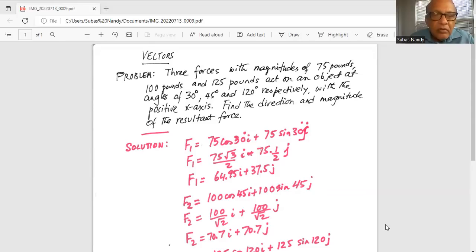So cosine of 30 degrees is square root of 3 by 2. So the first term becomes 75 multiplied by square root of 3 divided by 2 times i plus 75 sine of 30 degrees is half. So 75 divided by 2j. Now if we use our calculator, we will find out that the first coefficient of i is 64.95 and the coefficient of j is 37.5.